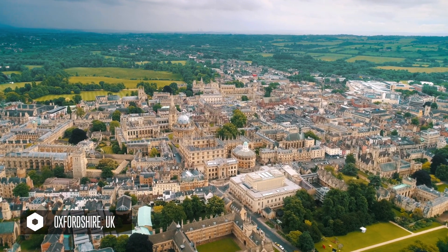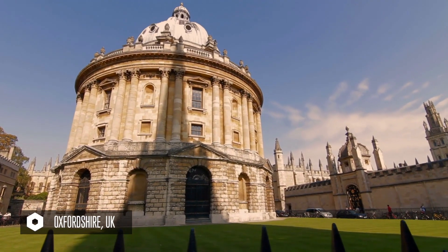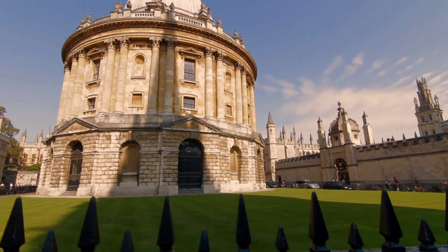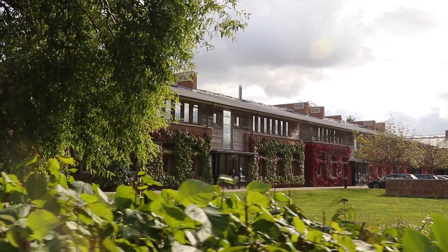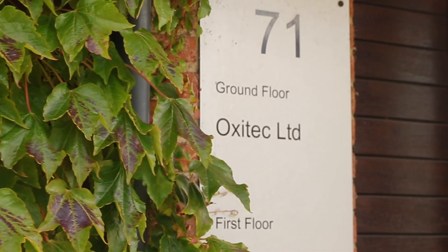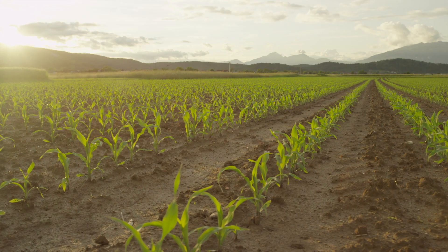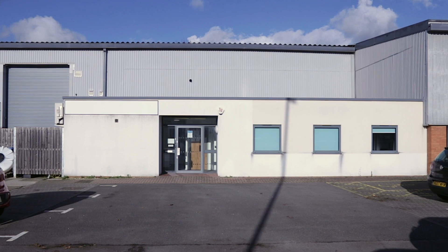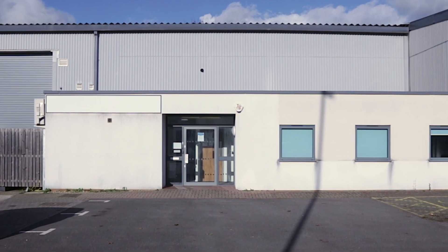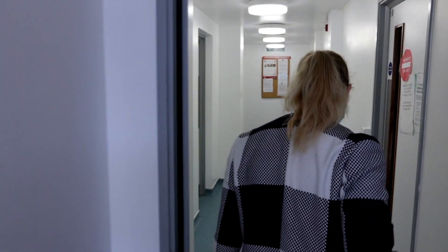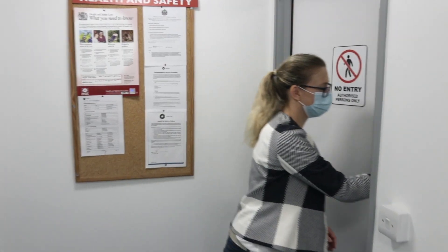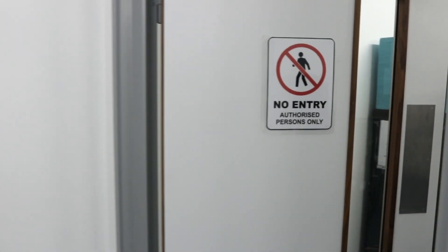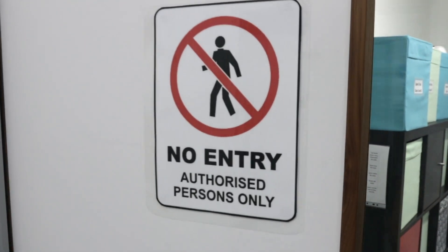Our first stop is England, where Oxitec's story began in 2002 as a spin-out from Oxford University. This is where we operate our headquarters and develop biological solutions to safely and sustainably control insect pests that spread disease and damage crops. Our facilities may look unassuming from the outside, but step inside to find our state-of-the-art innovation center and lab facilities, where Oxitec's team members, representing 15 nationalities, develop Oxitec's technology.